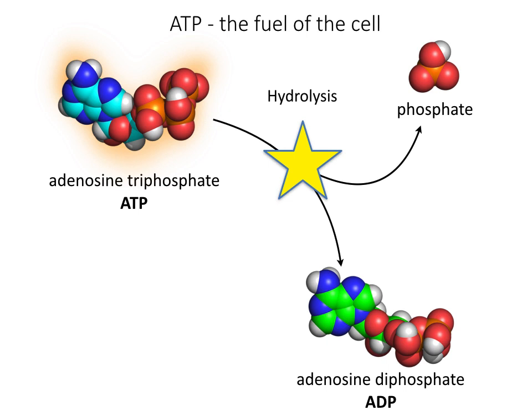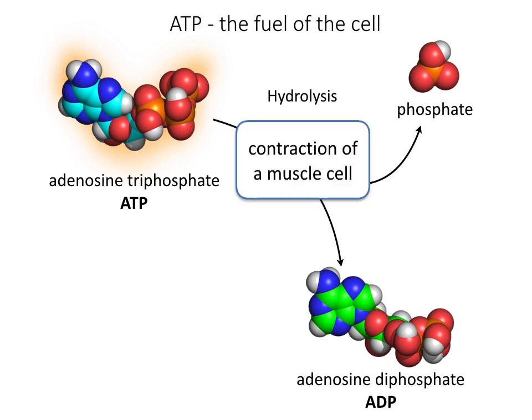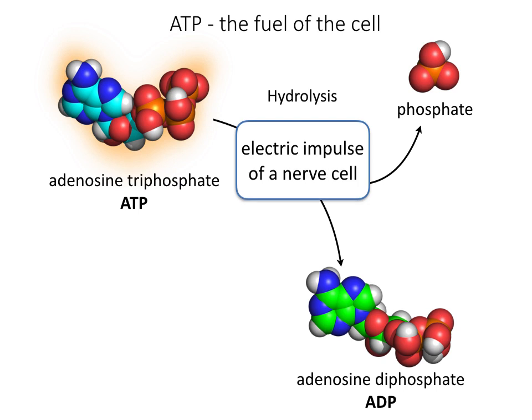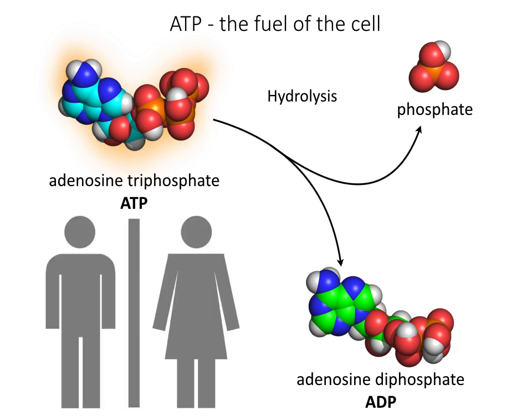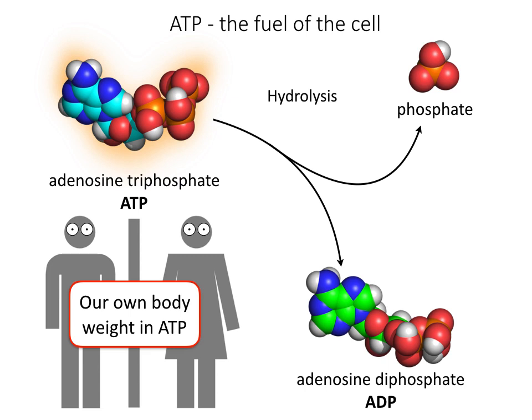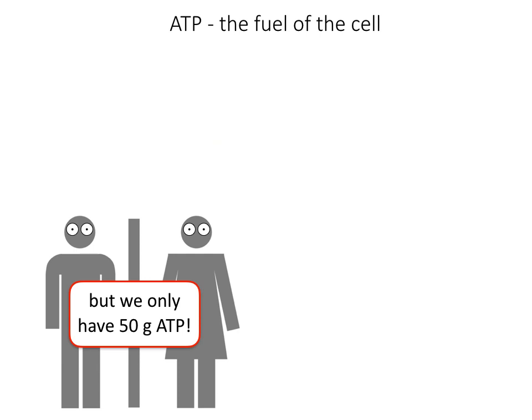For example, a contraction of a muscle cell, the synthesis of different molecules, or an electric impulse of a nerve cell — all these processes require a constant supply of ATP. We humans need our own body weight in ATP every day to sustain our activities. But there is a problem: we only have 50 grams of ATP in our body, and thus we need to remake ATP time and time again.